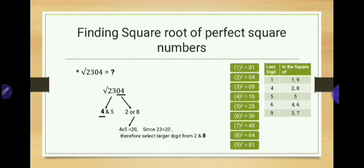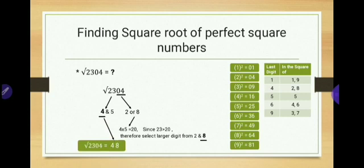To find the unit place, multiply the tens place digit 4 by its next consecutive number 5: 4 × 5 = 20. Compare 20 with the second group, which is 23. Since 23 is more than 20, select the larger digit from 2 and 8 — which is 8. Therefore, the unit place is 8, and the square root of 2304 is 48.